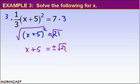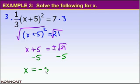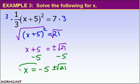The square root of 21 cannot be simplified, so we leave that radical as is. Now to solve for x, we subtract 5 from both sides, giving us x equals. On the right-hand side, we have unlike terms: negative 5 and the square root of 21. Since we cannot add or subtract unlike terms, our final answer is x equals negative 5 plus or minus the square root of 21.